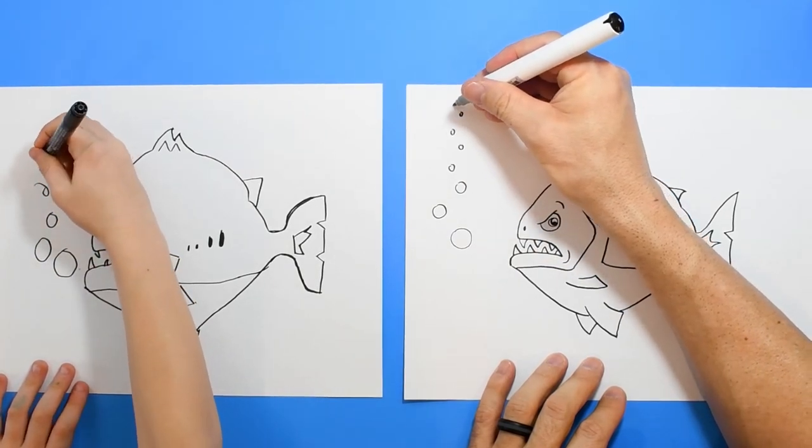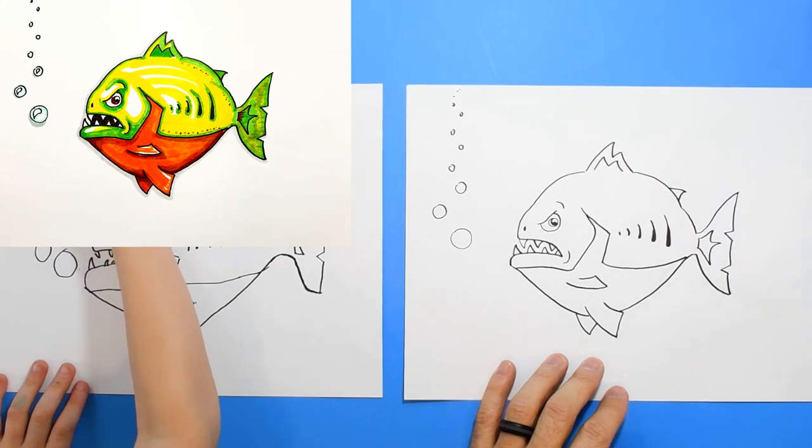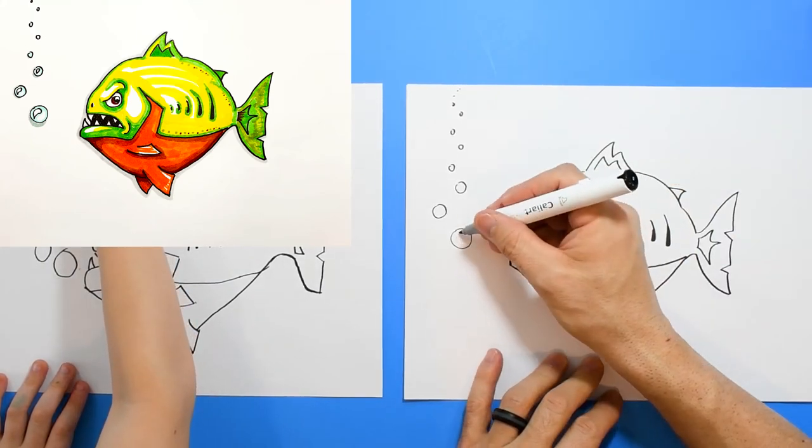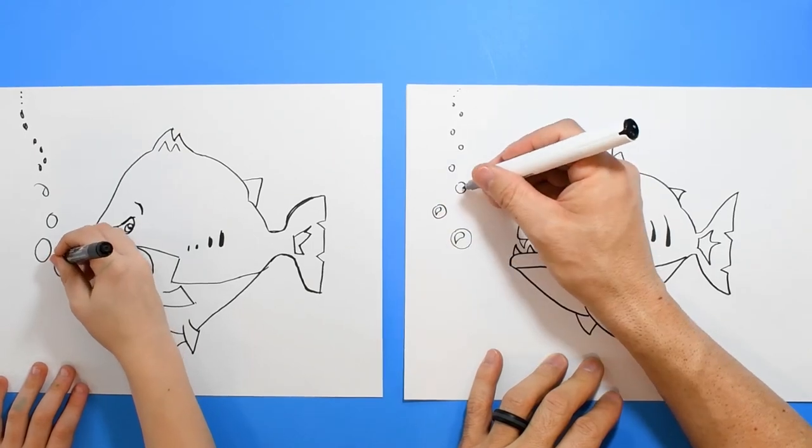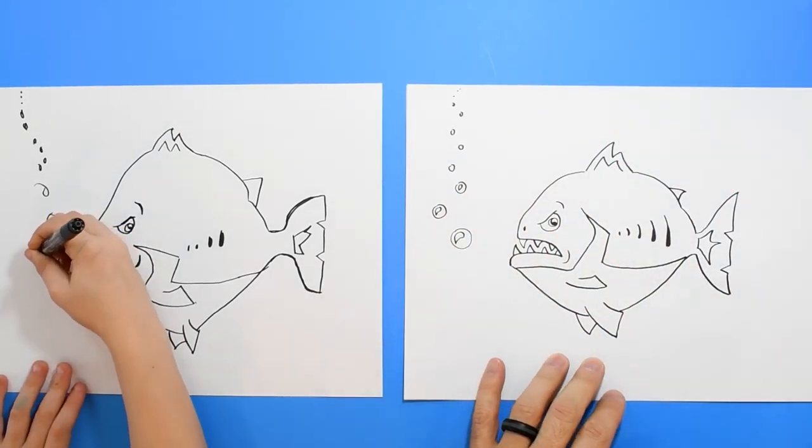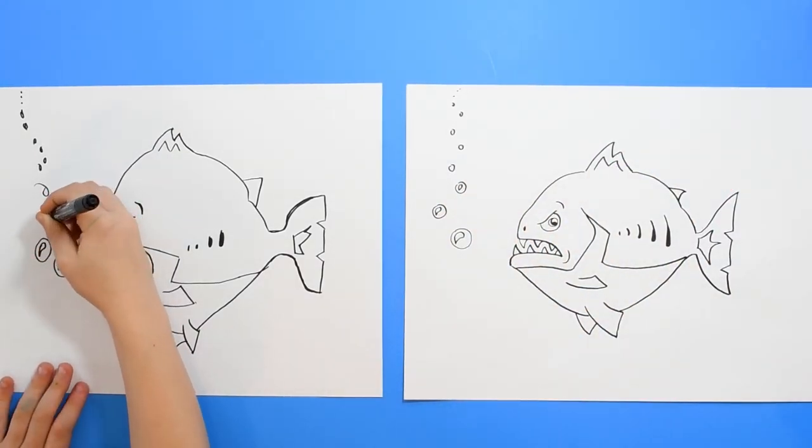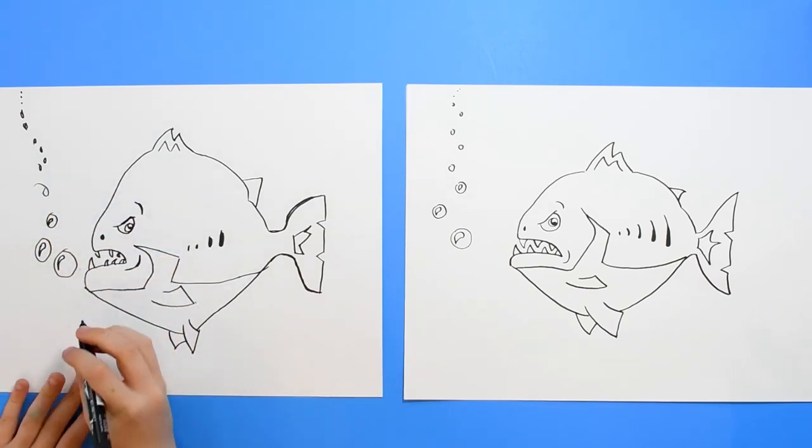They can go smaller, smaller as they go to the top. Draw the reflection, highlight of the bubble. Cool. All right. We have our outline of the piranha. Should we color this thing? Yeah. Okay. Fast forward, everybody.